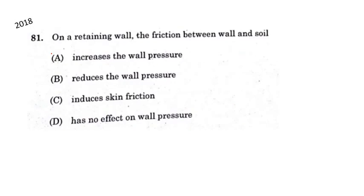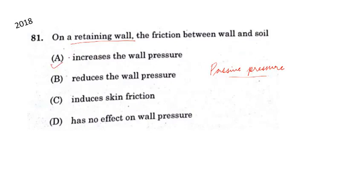The next question is: on a retaining wall, the friction between wall and soil. When the retaining wall pushes the backfill soil, the pressure that is developed is known as passive pressure. Passive pressure is the maximum pressure. So with friction on a retaining wall, the wall pressure will be increased. The answer is: it increases the wall pressure.